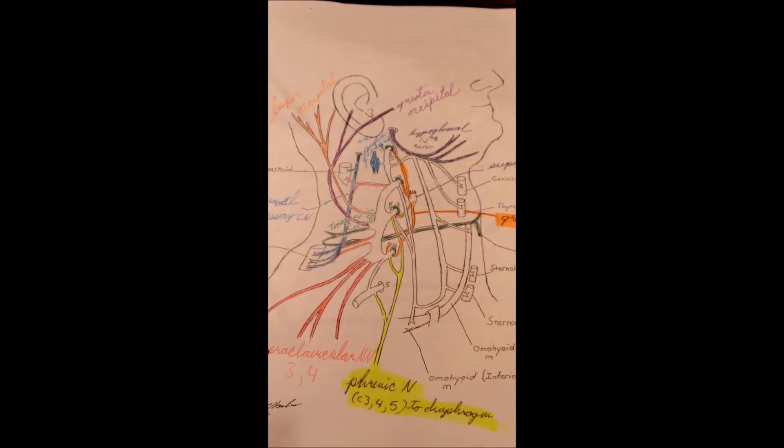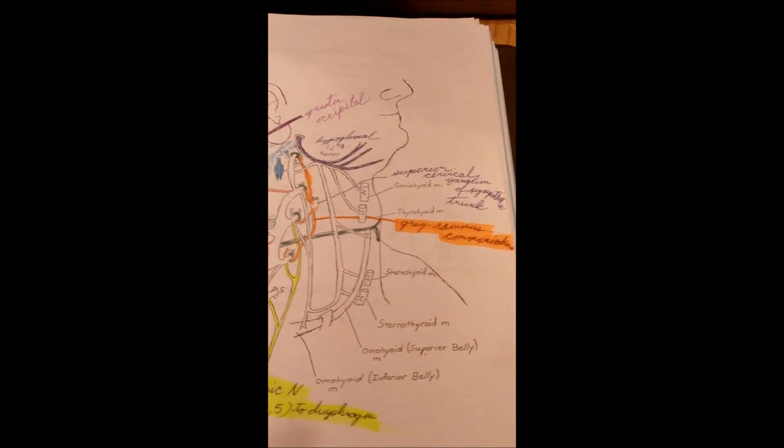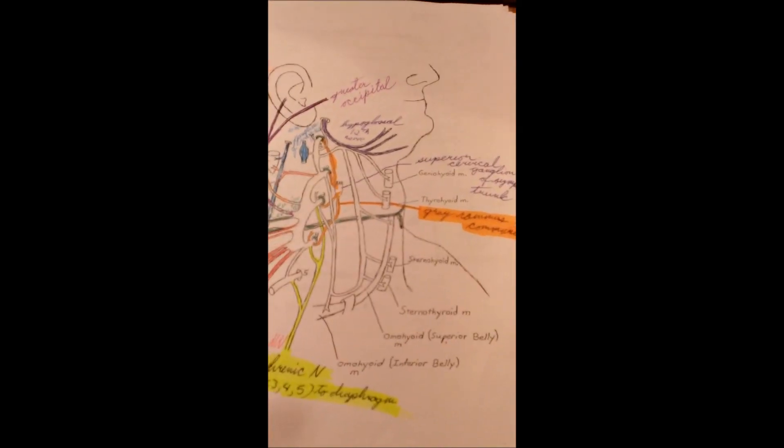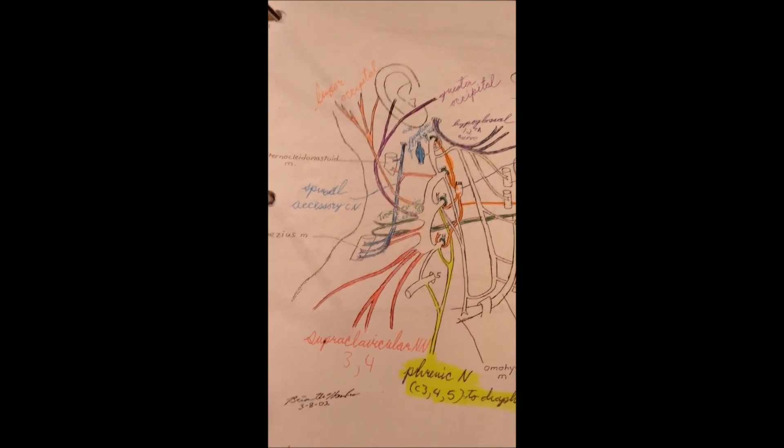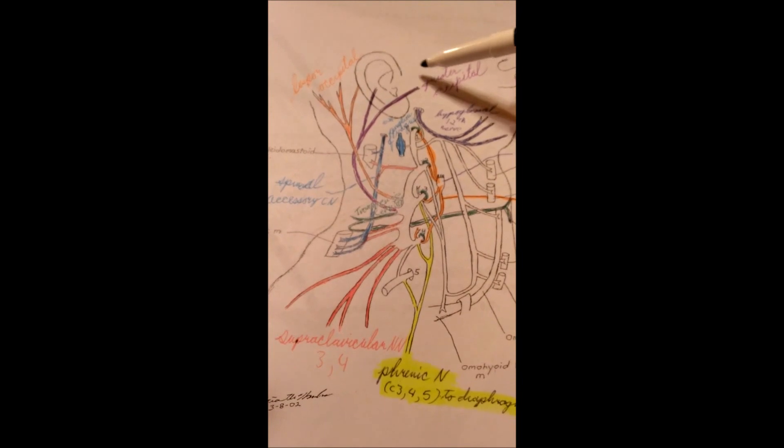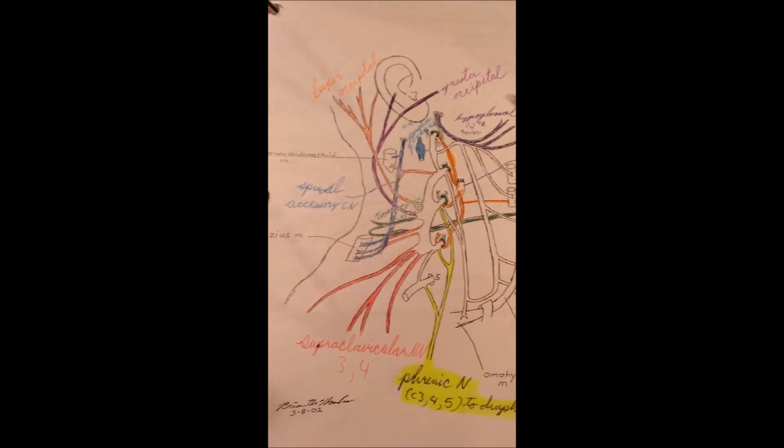This video I came up with a schematic to try to remember the cervical plexus. So these are the anatomical references that I'm basing it off of. There's one thing you'll note up here at the top, the greater occipital. That's actually wrong, it should be the greater auricular.